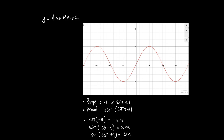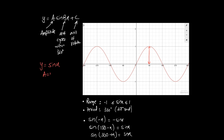Generally, a sine equation can be written as y = a sin(bx) + c, where the value of a is the amplitude, the value of b tells you the number of cycles within 360 degrees, and c is the axis of rotation. Since this is a graph of y = sin(x), the value of a is 1, b is 1, and c is zero.